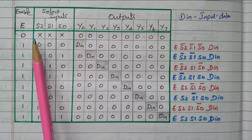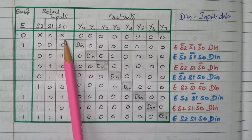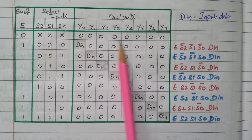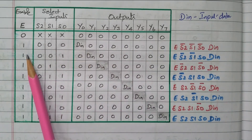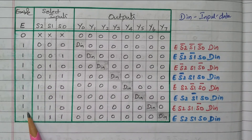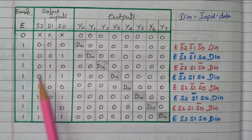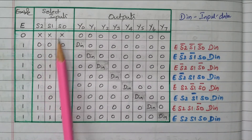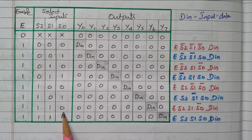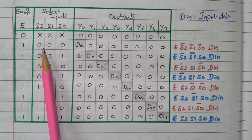If enable is 0, whatever may be the selection line, the output will be 0 — the circuit is not activated. Suppose enable is 1; for all other cases the circuit is now activated. The selection line has 3 inputs, so 8 combinations are available: 2^3 = 8 combinations.